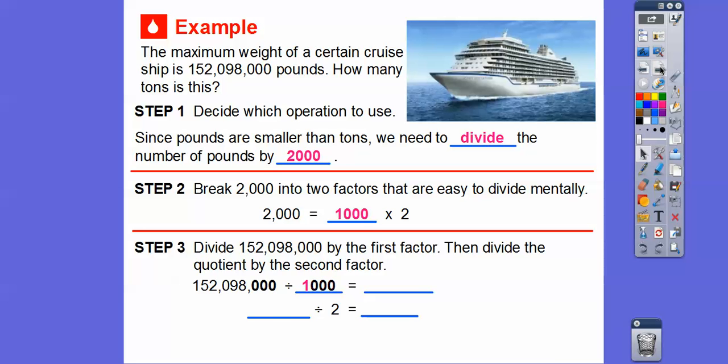Now check this out. Do you see how they both end in three zeros right here? When you divide by 1,000, you can just knock off the three zeros right there. So that's going to give us 152,098. When we divide it by 1,000, it takes off those three zeros.